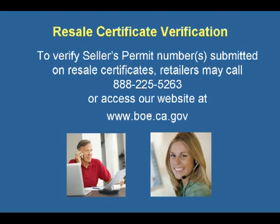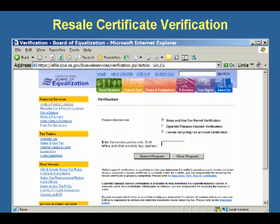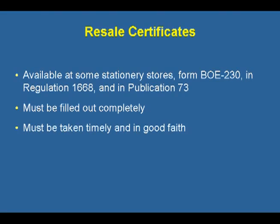If you wish to verify the seller's permit number included on the resale certificate as valid or not, you may call our toll-free number at 888-225-5263 or access our website. You may verify a seller's permit number on the Board of Equalization's website. This is what the seller's permit verification screen will look like. Resale certificates are available at many stationery stores. A sample resale certificate is also available on our website as Form BOE-230, or in Regulation 1668 or Publication 73.